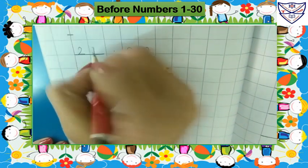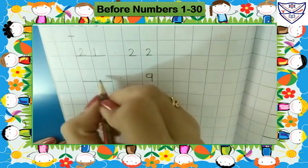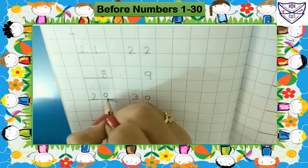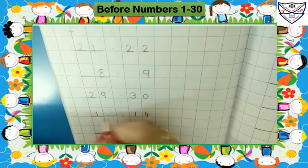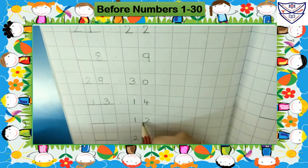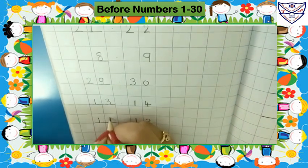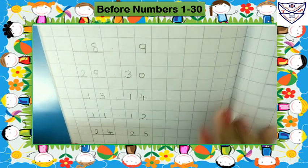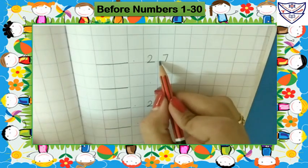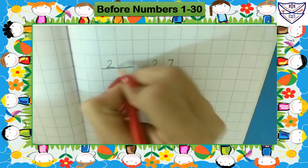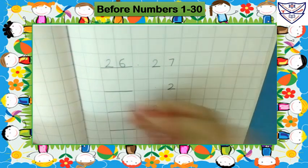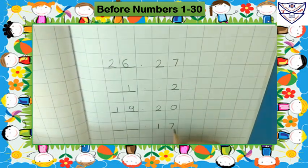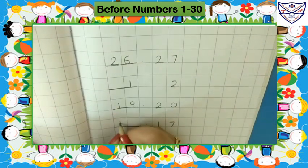What will come before 22? 21. So we will write here 21. What will come before 9? 8. So we will write here 8. What will come before 30? 29. So we will write here 29. What will come before 14? 13. So we will write here 13. What will come before 12? 11. So we will write here 11. What will come before 25? 24. So we will write here 24. What will come before 27? 26. So we will write here 26. What will come before 2? 1. So we will write here 1. What will come before 20? 19. So we will write here 19. What will come before 17? 16. So we will write here 16.